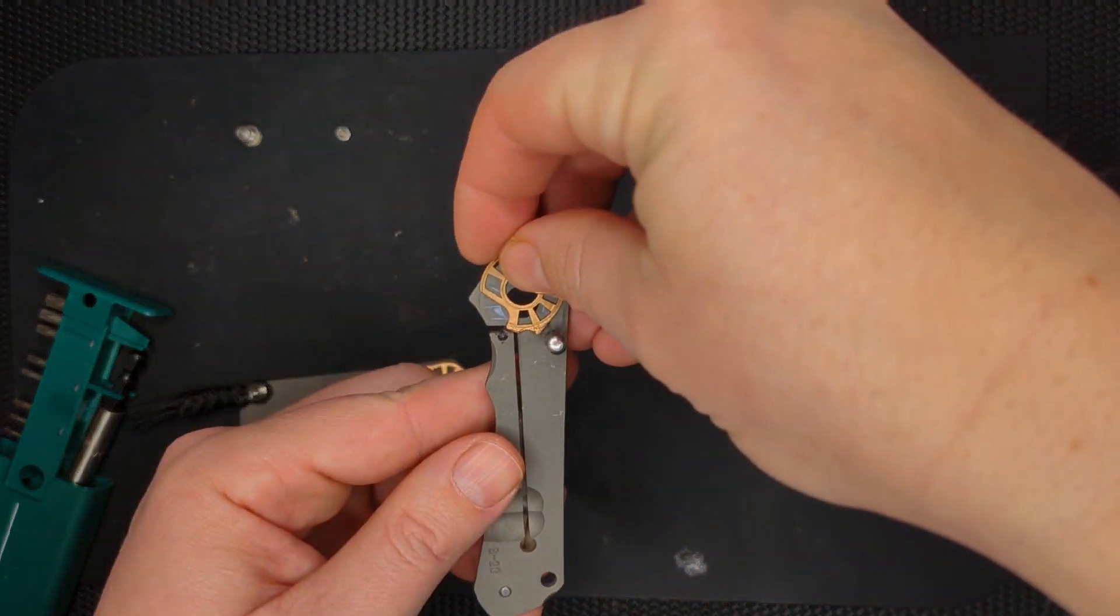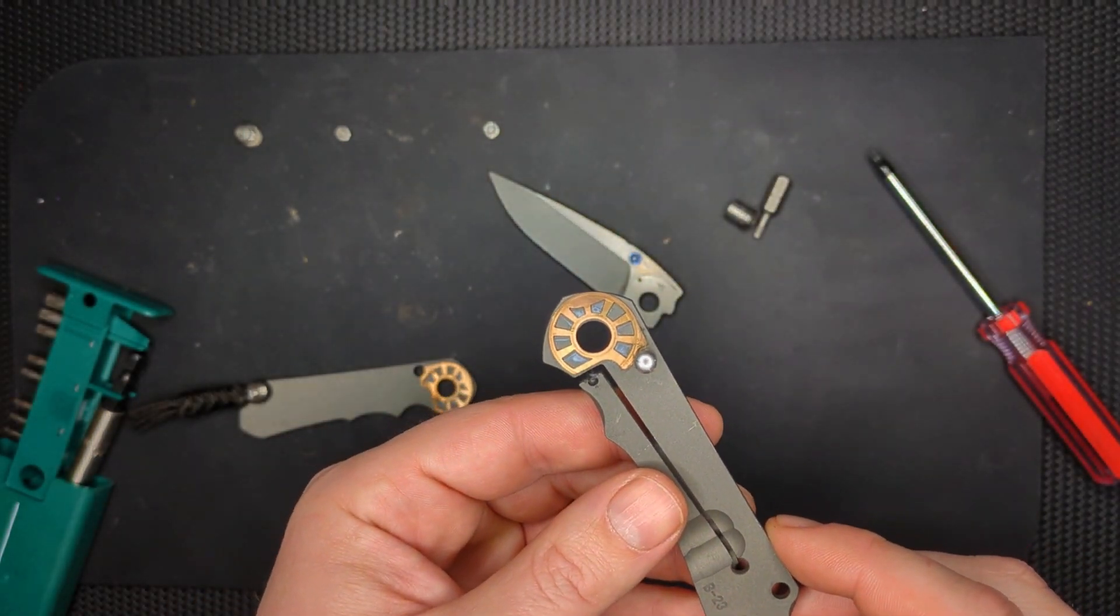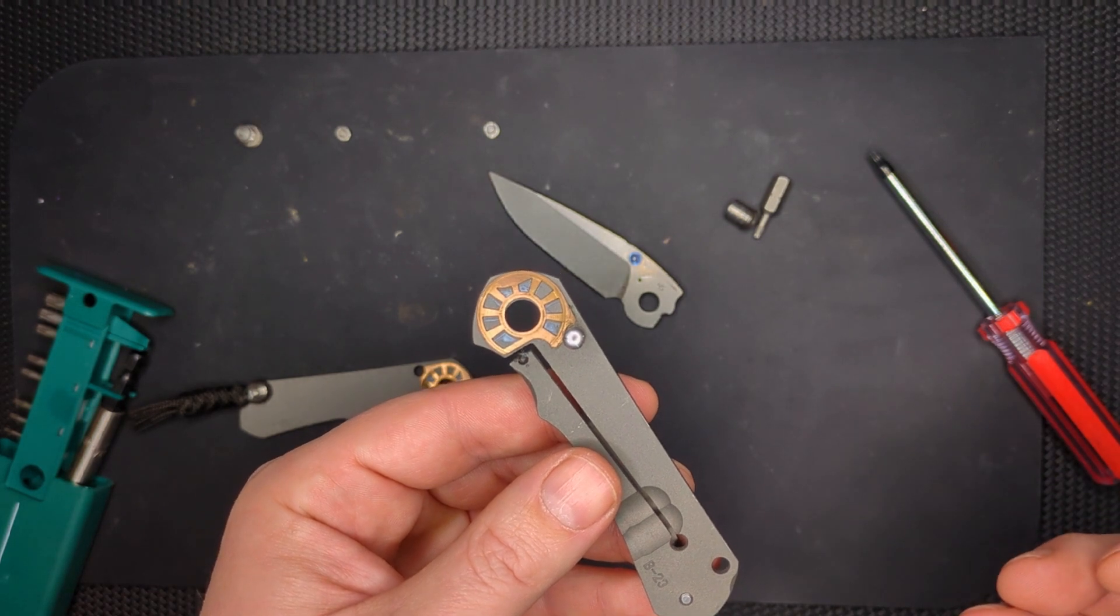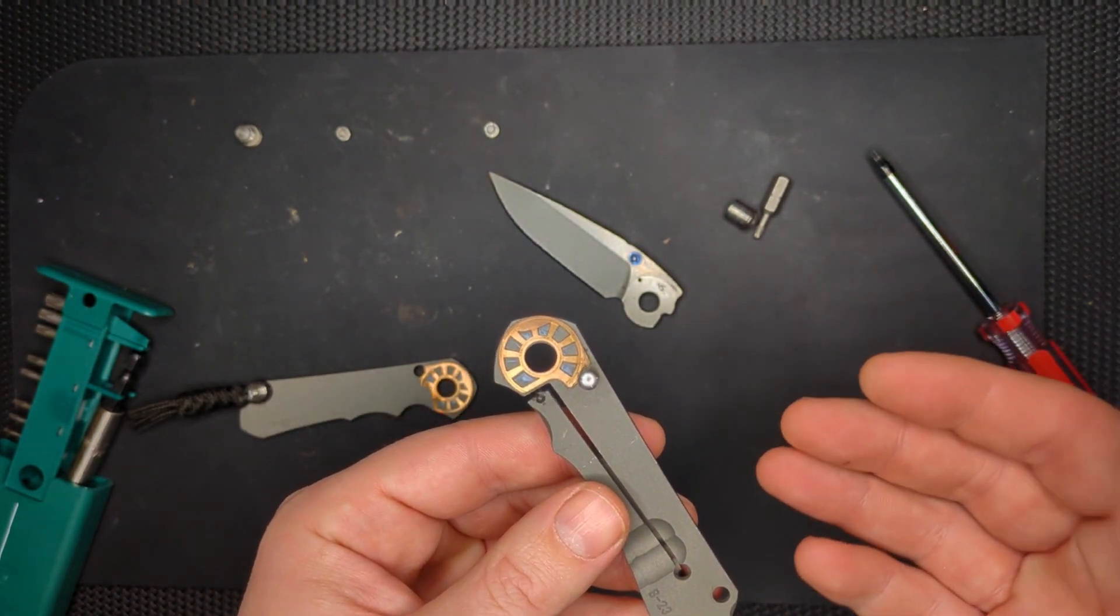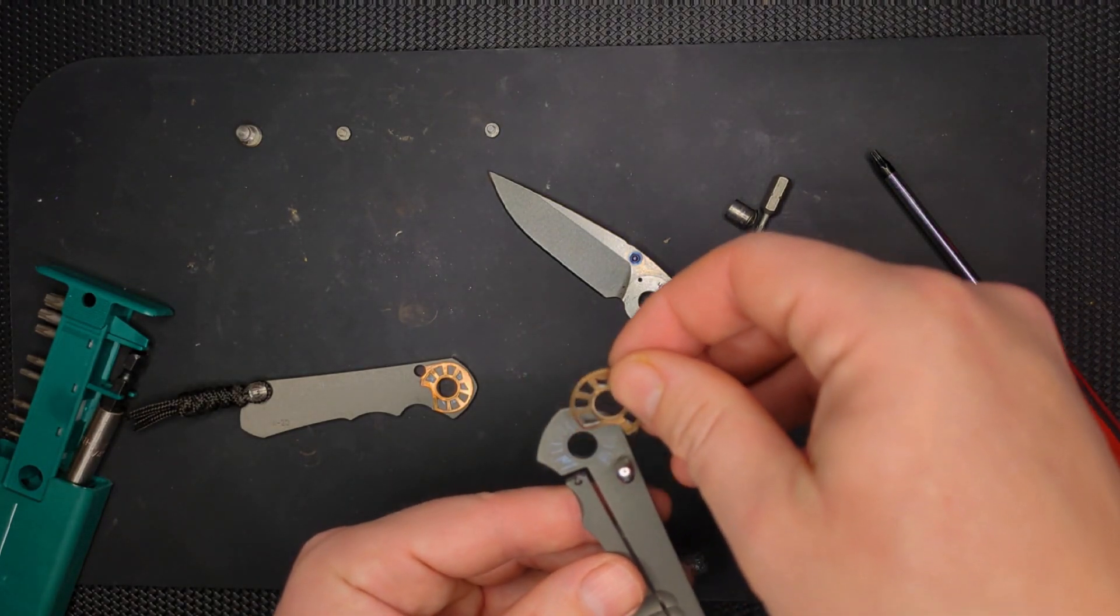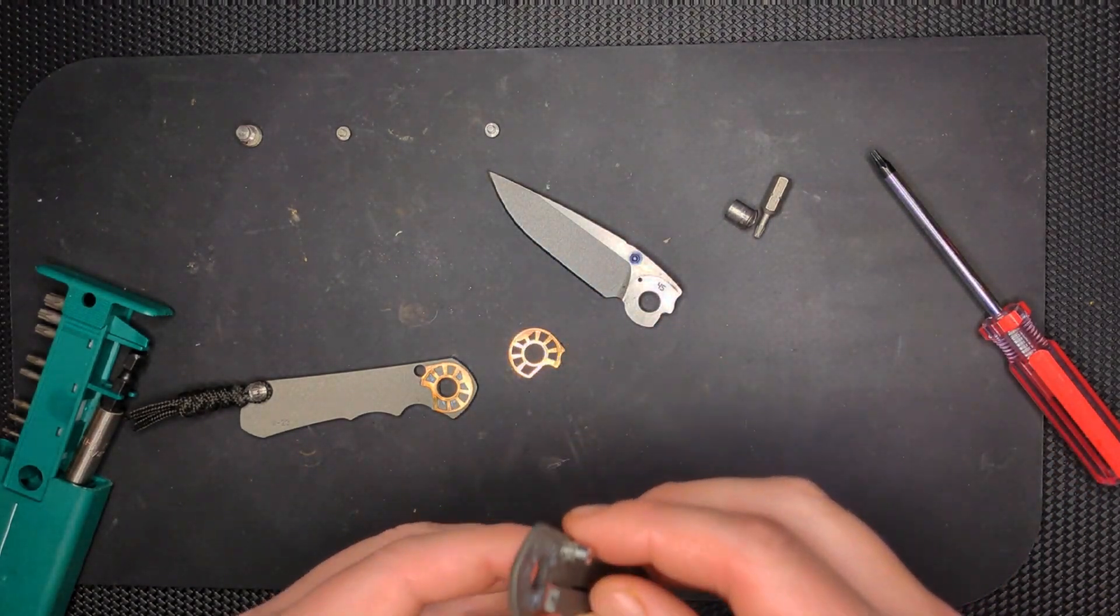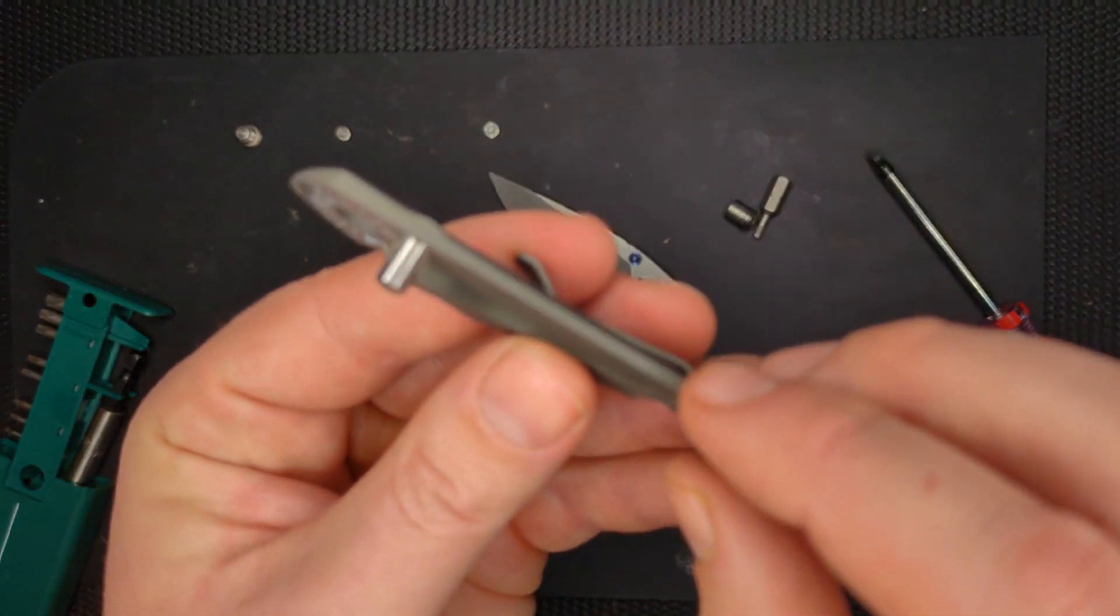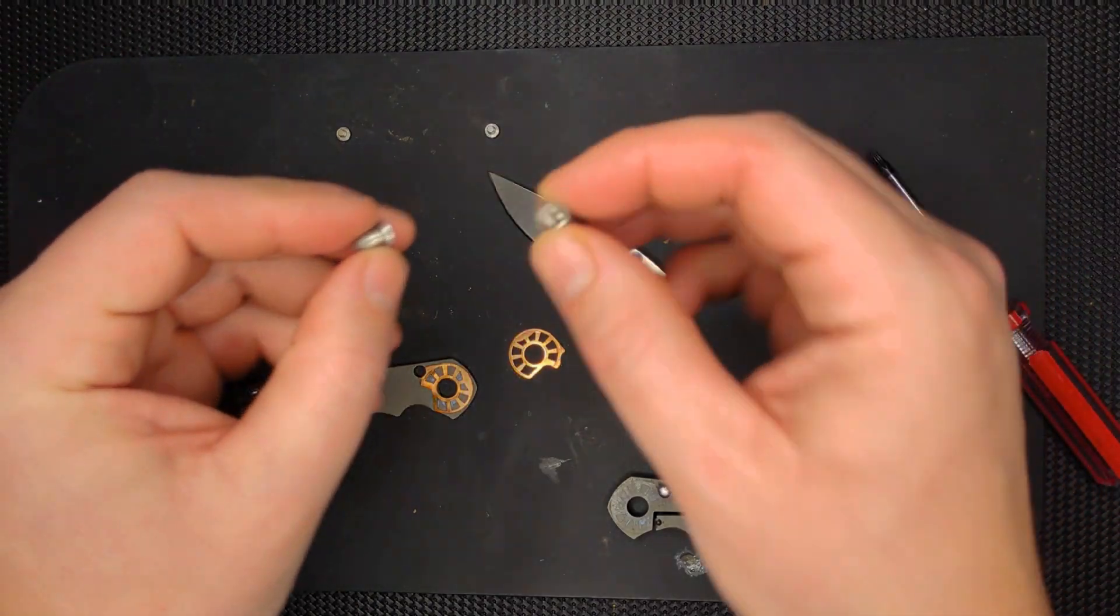But the way that the washers work, these bushings, they sit in there and they basically don't turn. The knife goes around them, which gives it that distinctive, what people call a piston feel when you're opening it. You can't flick this knife open. You roll it open, and it rolls open in a very controlled pressure point way. You can see in here that the backstop pin is oversized. In fact, everything about the hardware in this is oversized.